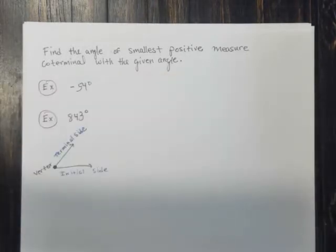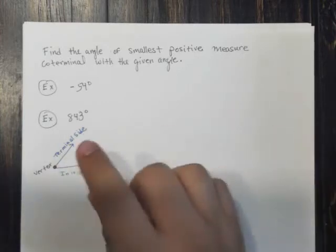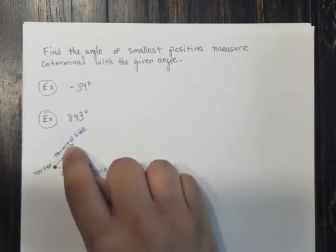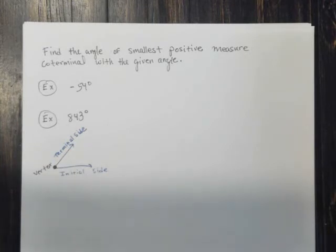Co means together. Terminal comes from Latin - if you speak Spanish, termina means where something ends. So together, they end at the same point. That's what coterminal means.